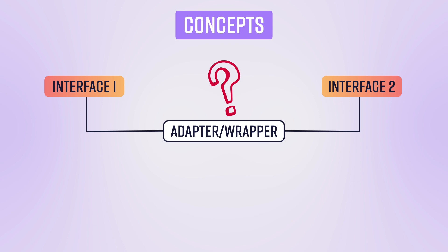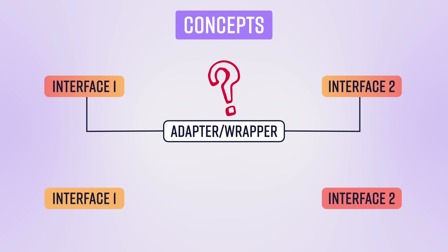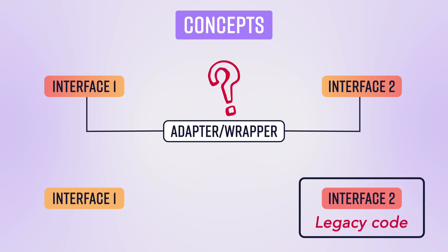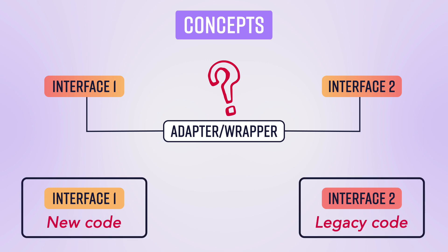Now, why do you need to do so? If those interfaces are not compatible, you could go and change one of them. But we cannot do that because this situation usually arises when legacy code has to be integrated with new code or another set of programs which are incompatible with the legacy code. So in the situation when the legacy code cannot be modified but you still have to integrate it, we use adapter design pattern to solve that.